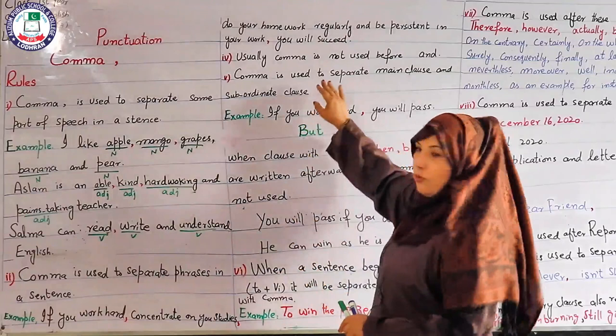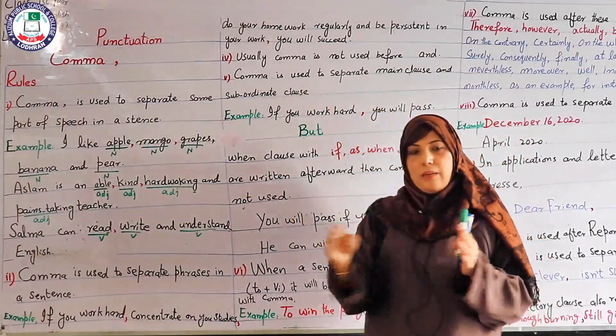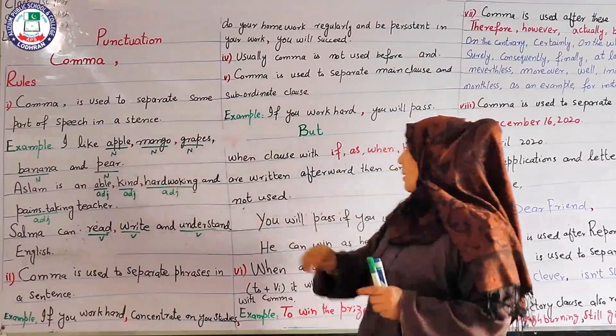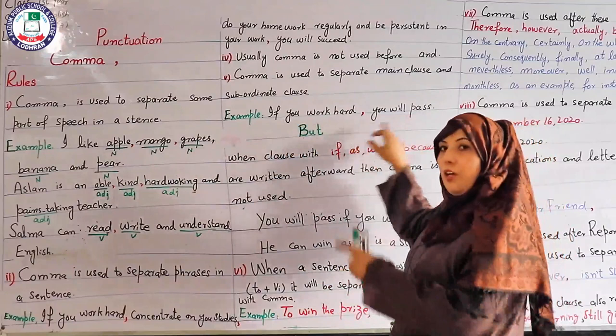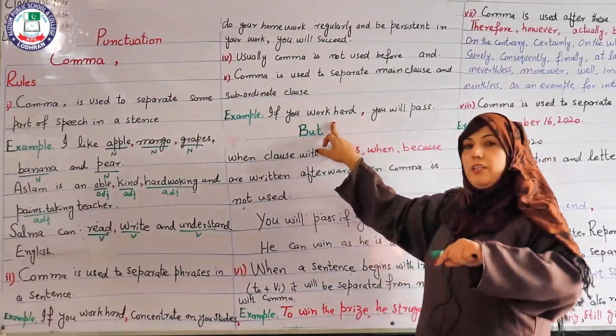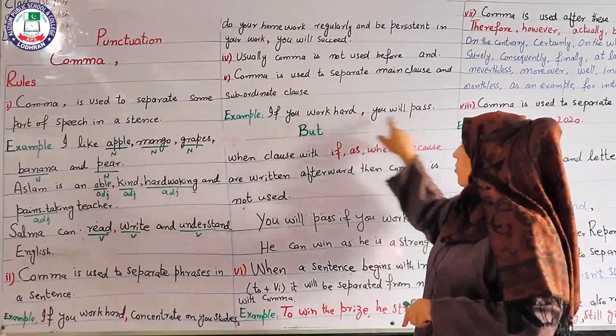Rule number five: comma is used to separate the main clause from the subordinate clause. In a compound sentence that has a main clause and a subordinate clause, we separate both clauses with a comma. For example: 'If you will work hard, you will pass.' The subordinate clause comes first and is separated from the main clause by a comma.